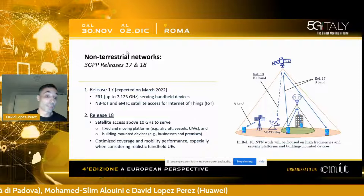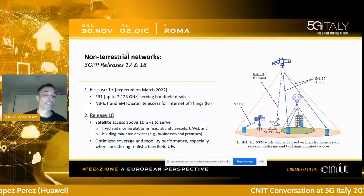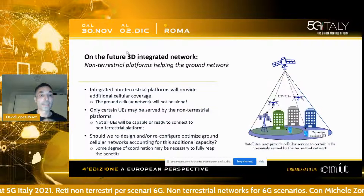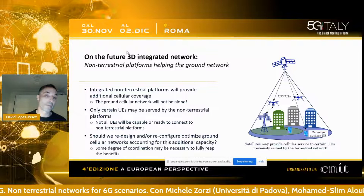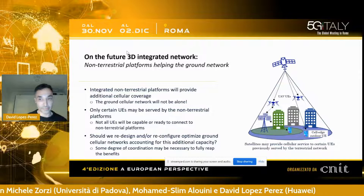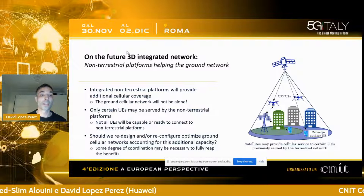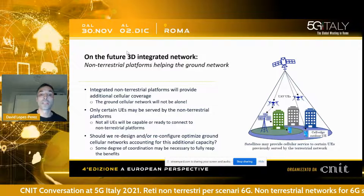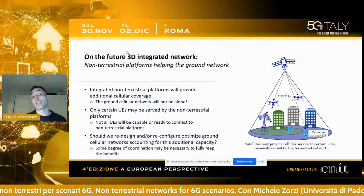An important item of work expected in Release 18 is optimized coverage and enhanced mobility, since satellites move quite fast and that generates issues with mobile users. Before concluding, I want to mention that this new paradigm poses some fundamental questions to operators. All operators own a terrestrial network, and now questions arise: are non-terrestrial networks competitors, or do they complement existing networks? And if so, how should integration be done optimally? All sorts of questions arise around user association and assignment of frequencies.